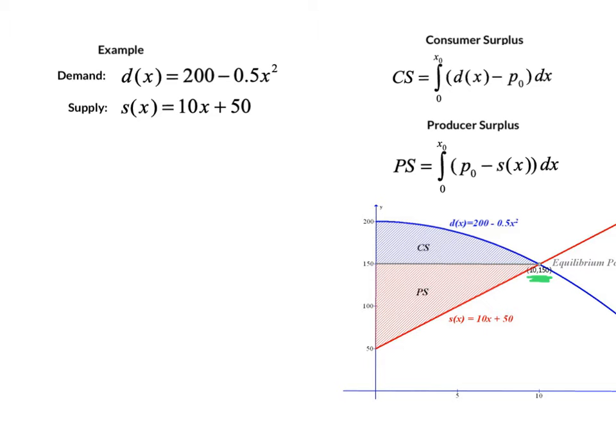We figured out where those intersected. If you need to you can do that algebraically by setting the two functions equal to each other and solving. It's a quadratic, I'll spare you the details. But the positive solution is 10, then you plug that in and we get our market price or equilibrium price of 150. In our definitions we call this equilibrium point x₀, p₀.